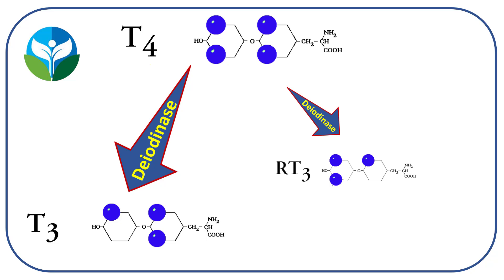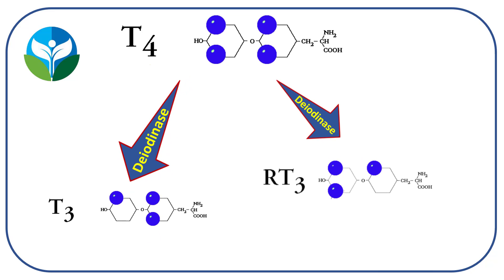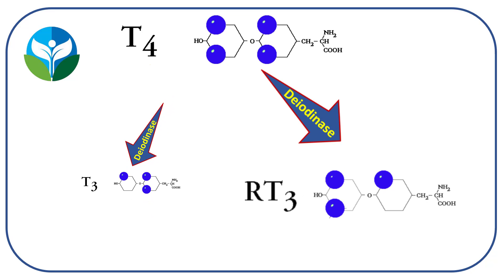If you look at both of these, they look very similar and they almost look like a mirror of each other. But when reverse T3 binds to the receptor sites in the cell, it's actually an inactive thyroid hormone, but it takes up the receptor and makes it so we don't have space for the active thyroid hormone to stimulate the cell to increase metabolism. So when we see that increase in stress, we can actually see how reverse T3 starts to increase.